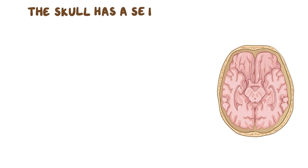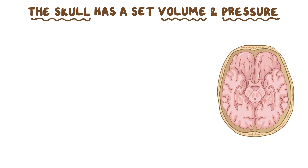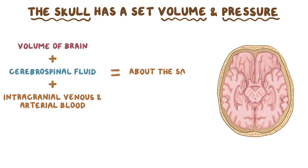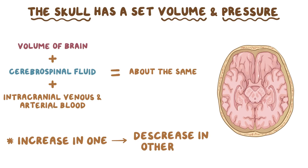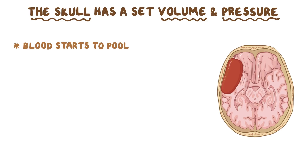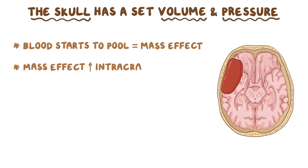The skull has a set volume, and the pressure inside is kept relatively constant. The sum of the volumes of the brain, cerebrospinal fluid, and intracranial venous and arterial blood is always about the same. So if there is an increase in the volume of any one of these three, there is a compensatory decrease in the other two. For example, when a high-speed golf ball hits you in the head, an artery could rupture within the skull. As the artery bleeds, the blood starts to pool, creating a mass effect within the skull that increases the intracranial pressure.